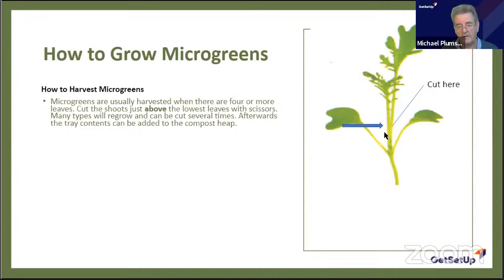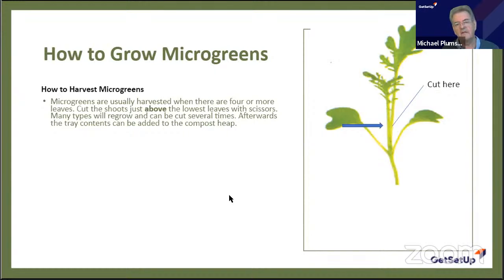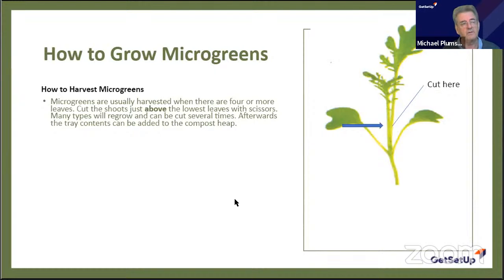If they do have two leaves low down, cut above those. If they don't have leaves right at the bottom, cut at least half an inch above ground level. Cut above the lowest leaves — that's always safe. After cutting, you can throw the soil away, reuse it, or dry it out.